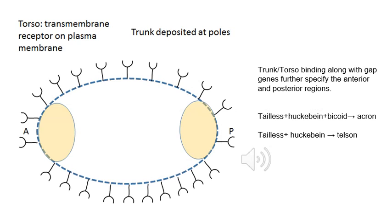The anterior and posterior regions are also defined by the presence of an acron or a telson. A torso receptor is present throughout the plasma membrane, but the trunk ligand is deposited only at the poles. This receptor-ligand binding, along with the expression of several gap genes, specifies whether an acron or a telson is formed.